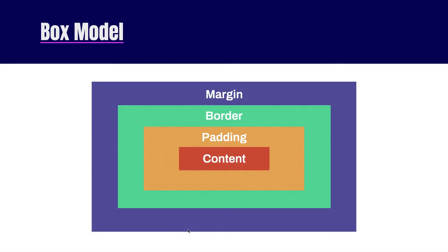Think of every single element on a website — your text, images, divs, buttons, everything — as rectangular boxes. They start with the content, followed by the padding, the border, and then the margin. Padding is within the border, and margin is outside of the border. By default, the padding, border, and margin are all going to be set to zero pixels, so you're not going to see them. However, they are always there and can be changed. Let's see how that works with code.